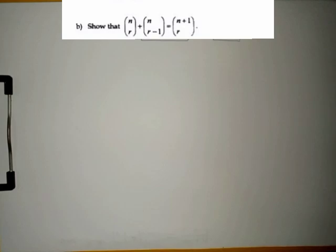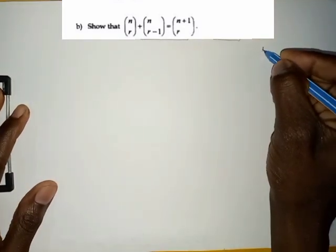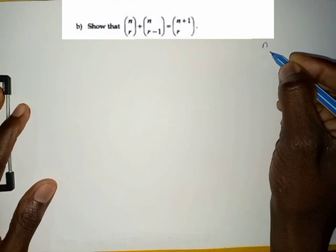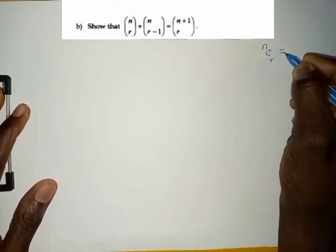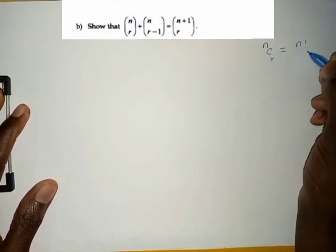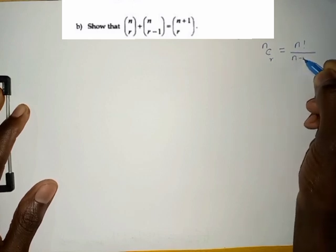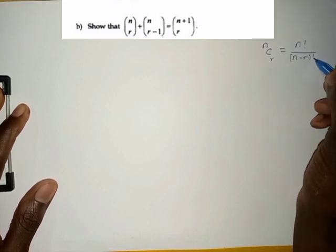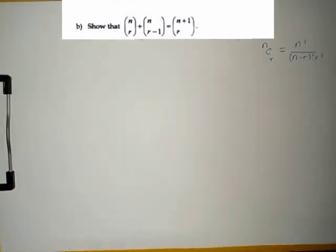According to the principles of binomial, we understand that if something has been written in a form of combination, this can just be the same as n factorial over n minus r factorial, then r factorial. That's the principle that we are going to be using to solve this question.